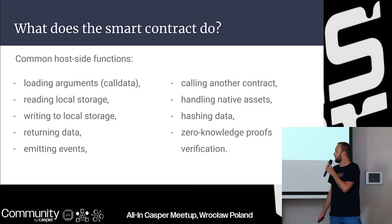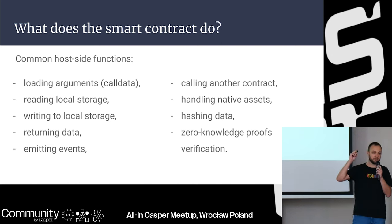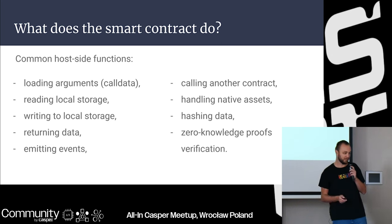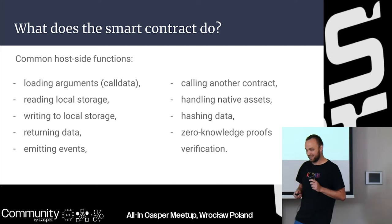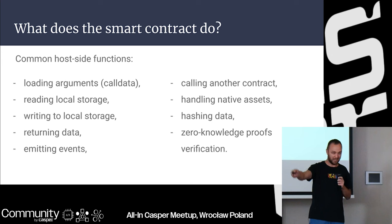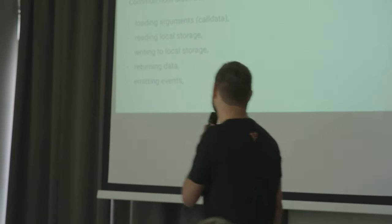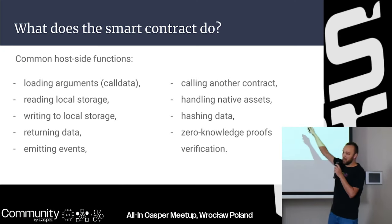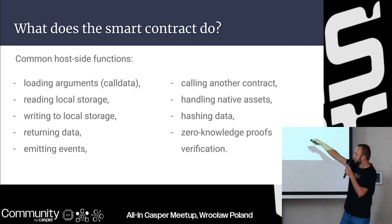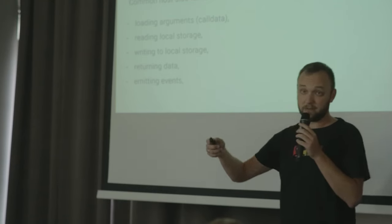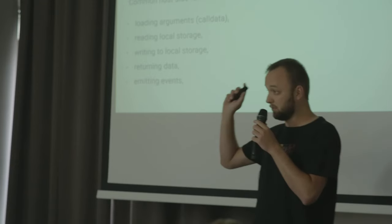What are the common host-side functions? What can a smart contract do? We need to manually load arguments passed to the contract, read from local storage, write to local storage, and return data — so after the computation is done we send something back, and we need to do this manually.